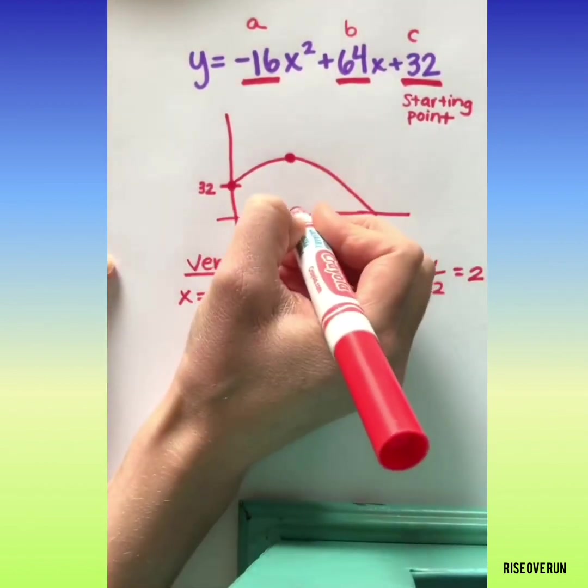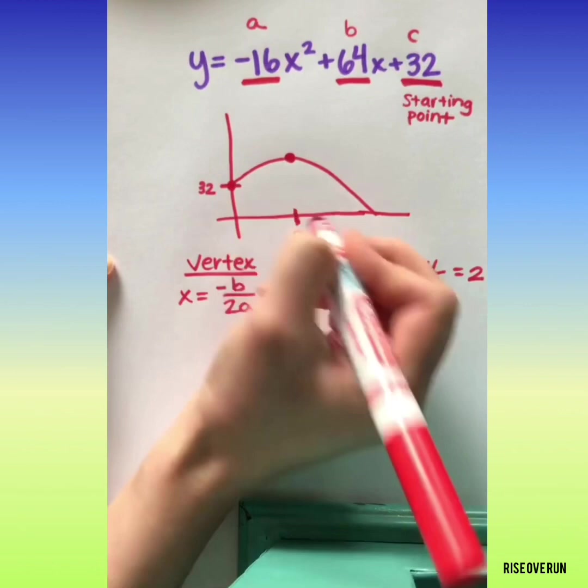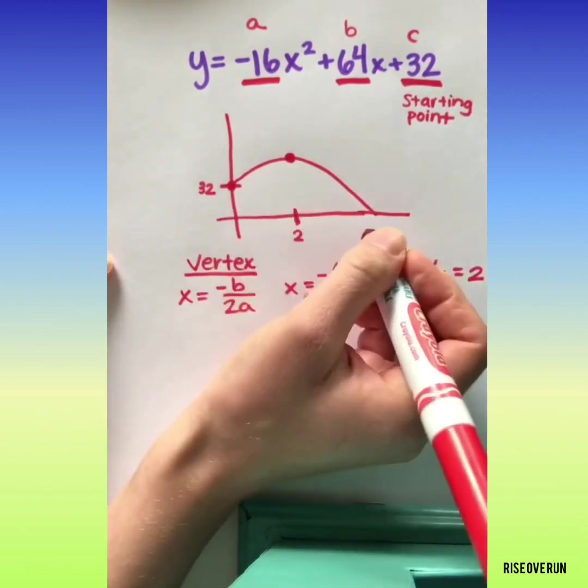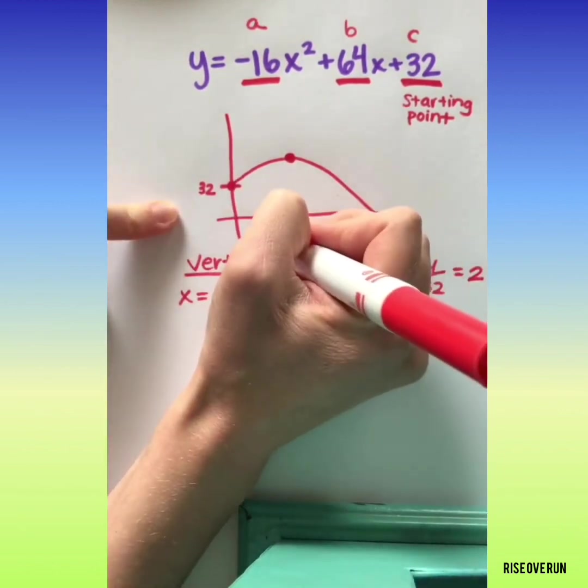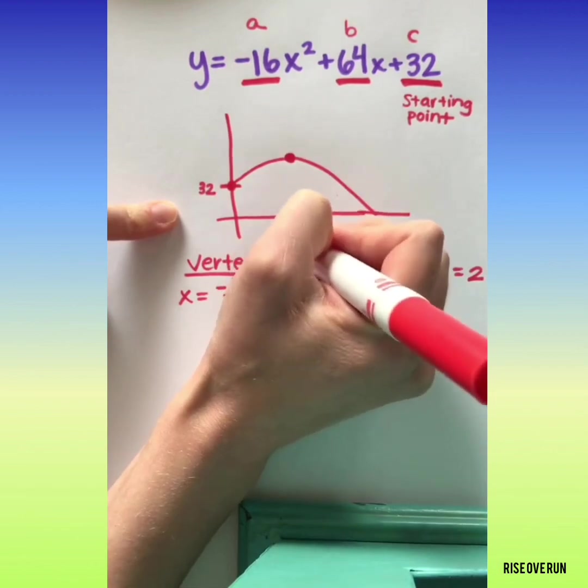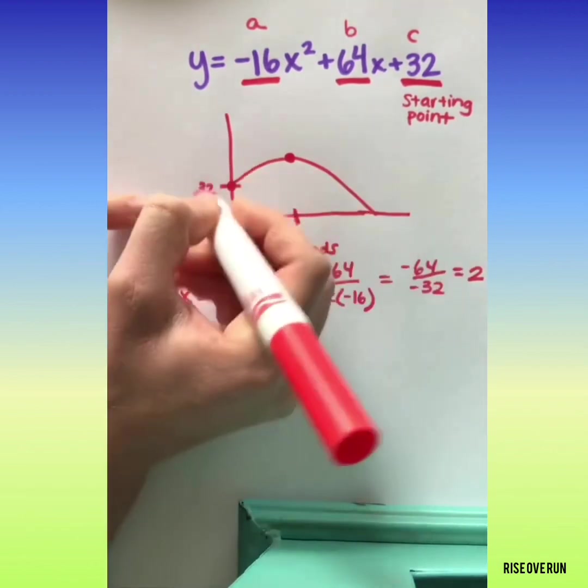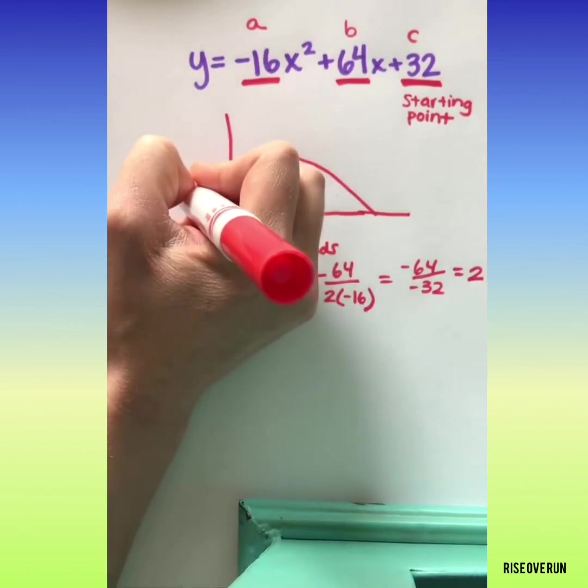The result is 2. So that means right here is 2. Let's go ahead and label both of these axes. This one down here is measuring time in seconds, and this here is measuring height in feet.